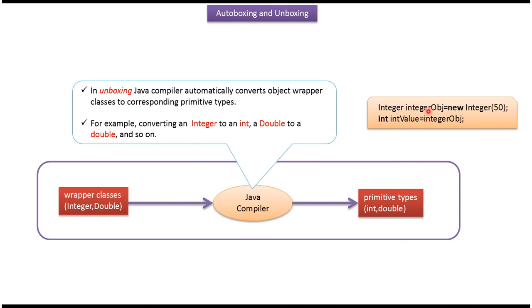Here you can see the example of unboxing. Here I am assigning an Integer object to a primitive data type int. Java compiler automatically converts Integer object to primitive data type int.